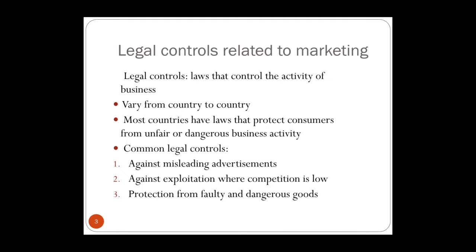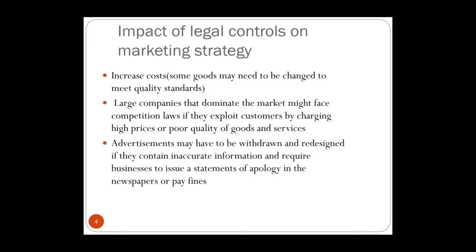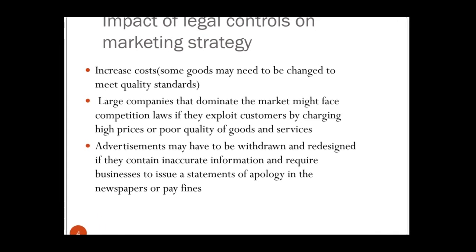We are talking about consumer protection laws — laws that protect consumers and control how businesses do their job. For example, businesses are not allowed to do misleading advertisements, they are not allowed to exploit customers, and they are not allowed to set fixed prices with their competitors. Consumers have the right to sue the business if the product is dangerous or a faulty good. Usually exam questions ask about the impacts of legal controls on the business and its strategies.